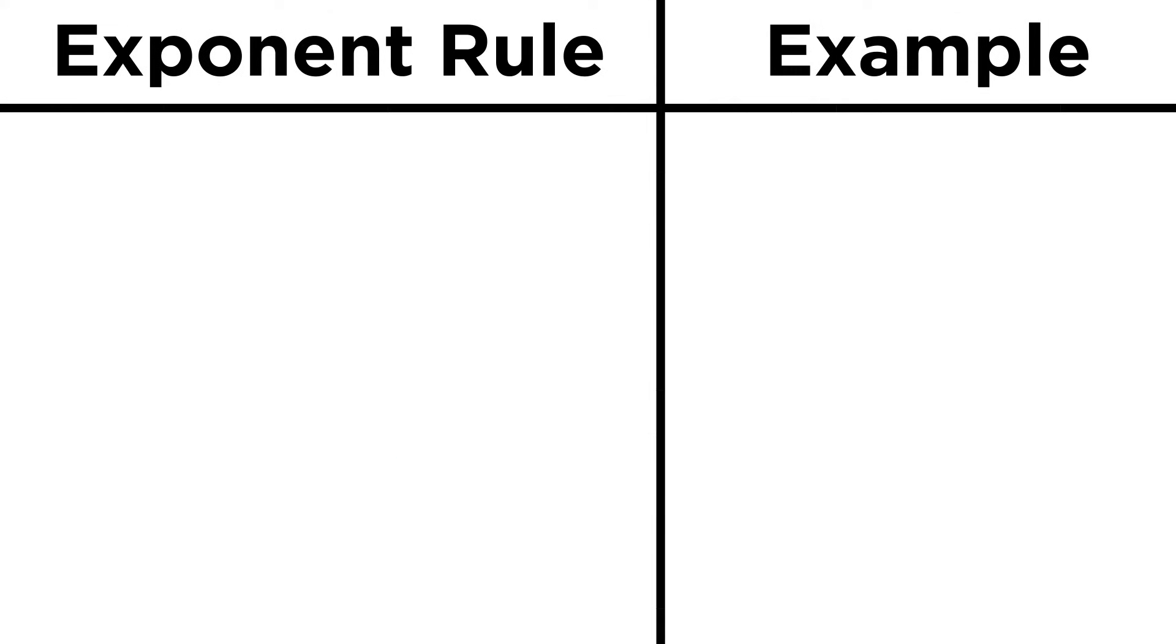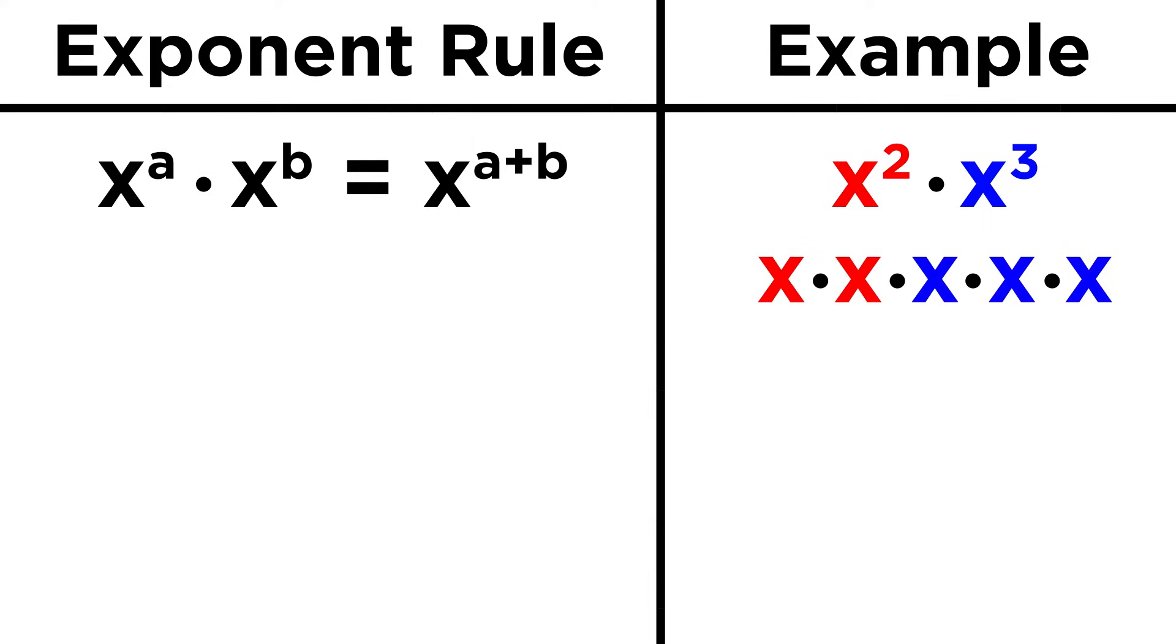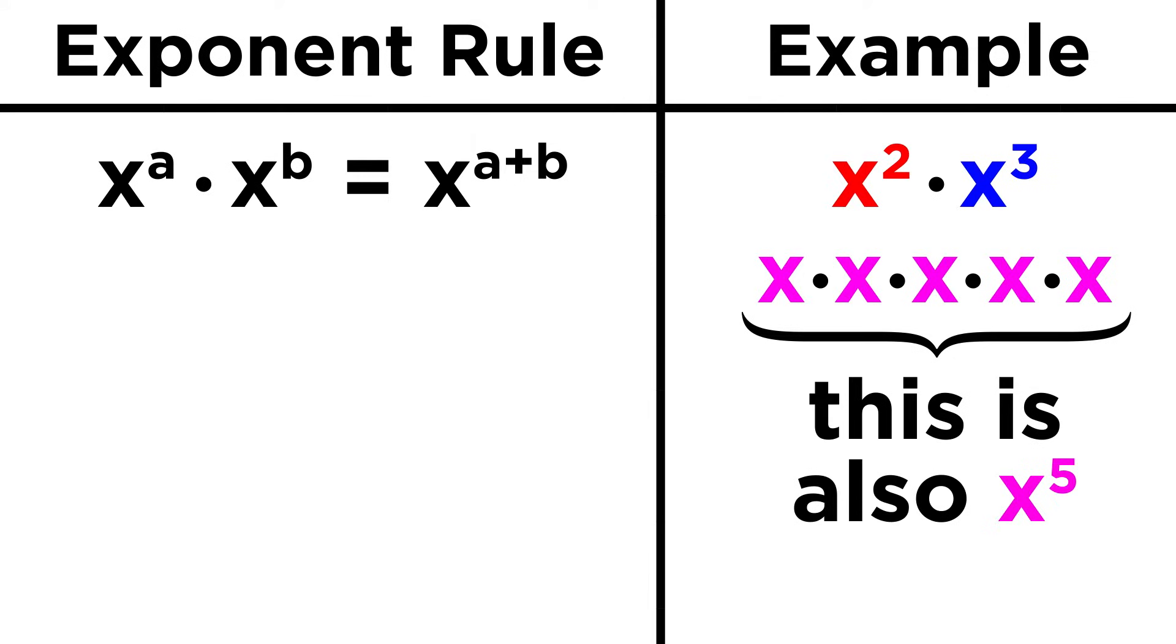Another way to understand this is to learn the rules of manipulating terms raised to exponents. x to the a times x to the b is equal to x to the a plus b. This must be true, because let's say we have x squared times x cubed. That could be written as two x's times three x's. But that's now just five x's in a row, so we should be able to call this x to the fifth. And that's why we do a plus b, because two plus three is five, and that represents the total number of times we are multiplying x.